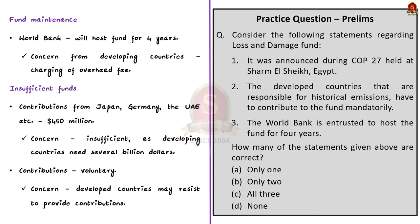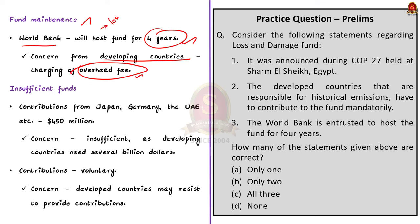The second issue is with fund maintenance. The World Bank is interested in hosting the fund for an interim period of four years, but the problem is the World Bank is expected to charge a significant overhead fee. This is opposed by developing countries because the outcome on fund dispersal has yet to arrive and may be delayed for a few more years. Till then, the World Bank will charge an overhead fee, meaning a significant sum will go to the World Bank at the cost of the developing countries.